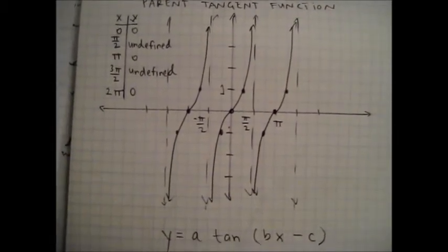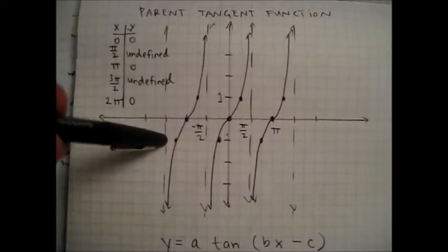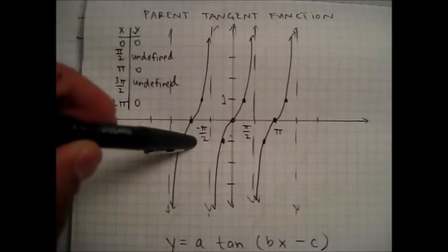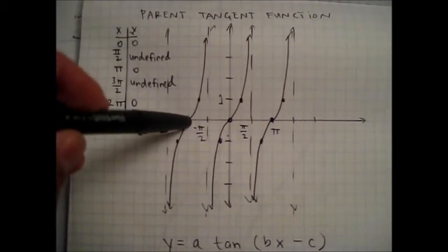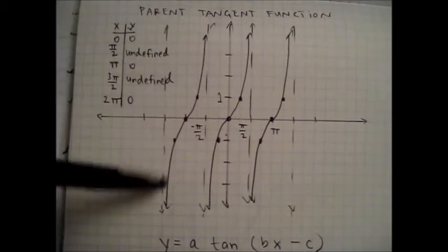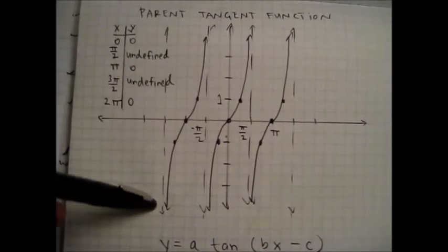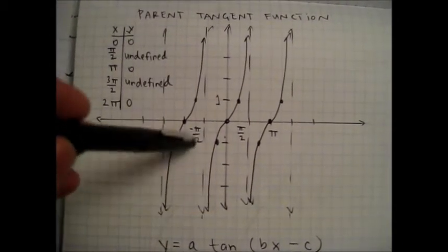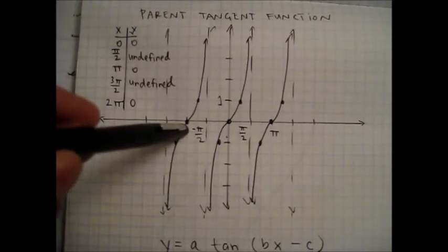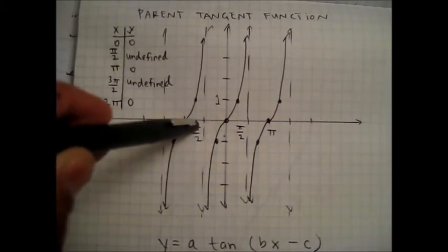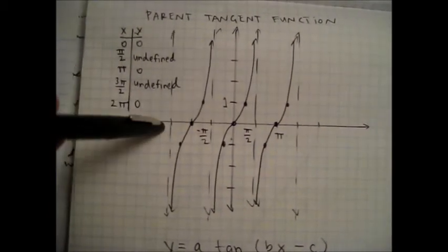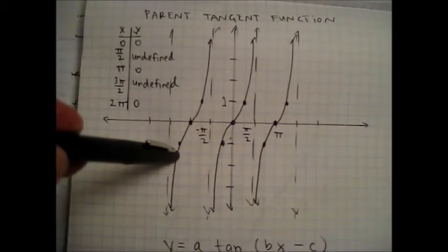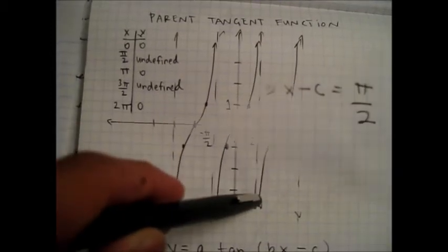All tangent functions follow the same pattern. They have asymptotes, and the halfway point between asymptotes is a zero. To graph the shape, you need to find the halfway point between this zero and this asymptote, and graph up one. And on this side, you graph down one. Then the pattern continues.